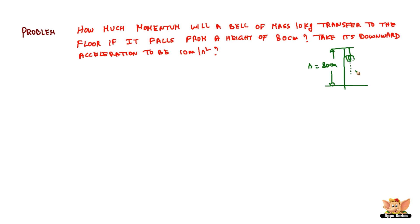So we understand from this problem that a ball of 10 kg has fallen from a certain height of 80 centimeters. The given data is: mass of the object which is the ball, m is 10 kg, and the downward acceleration a is 10 meter per second square, and the distance it has traveled s is 80 centimeter. Convert it into meter, so 80 by 100 is 4 by 5 meter, since 1 meter is 100 centimeter.